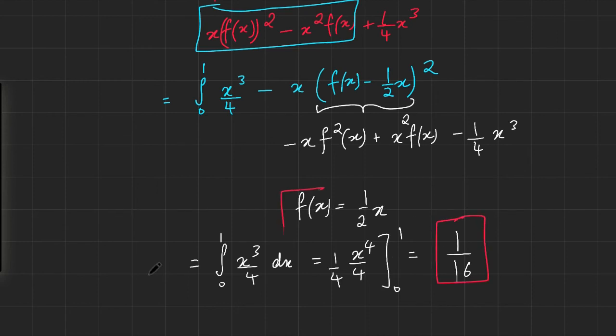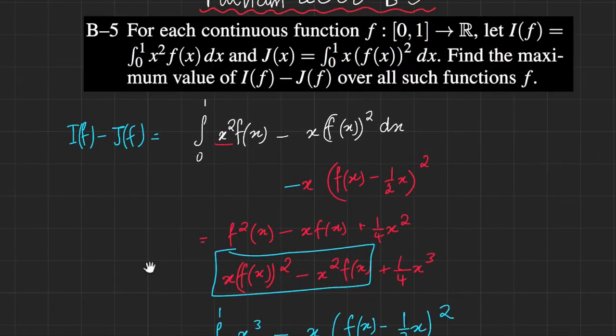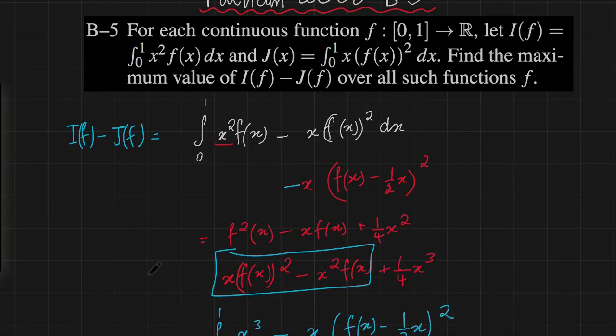And so our maximum value should be theoretically 1/16. We can test if this works, and actually we know that it works. It is obtained at f(x) equals ½x. And that's the problem solved. This would be the maximum value obtained over all functions defined as such.